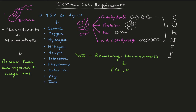The remaining macronutrients — calcium, magnesium, iron, and potassium — are present as ions. Because they exist as ions, they are not required in quite as high a quantity, but they are still required in large amounts overall.